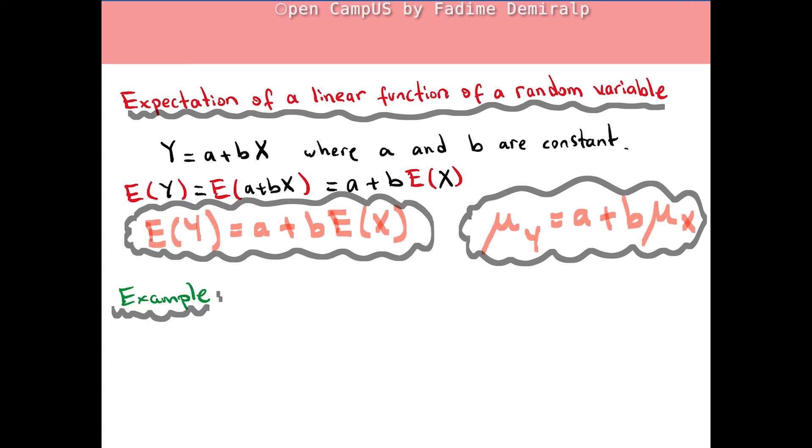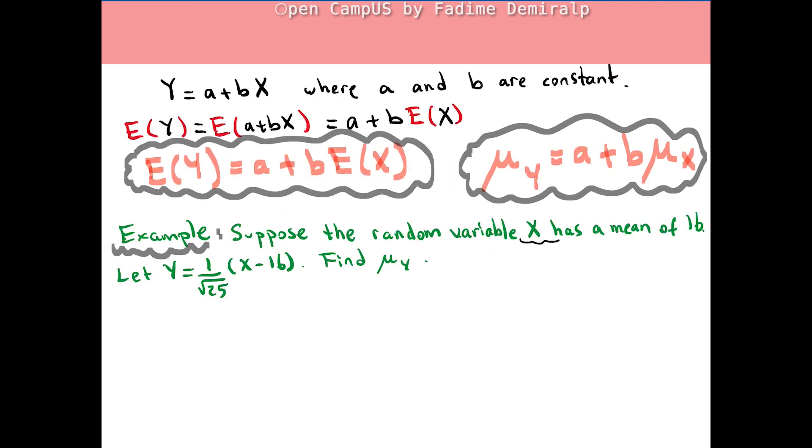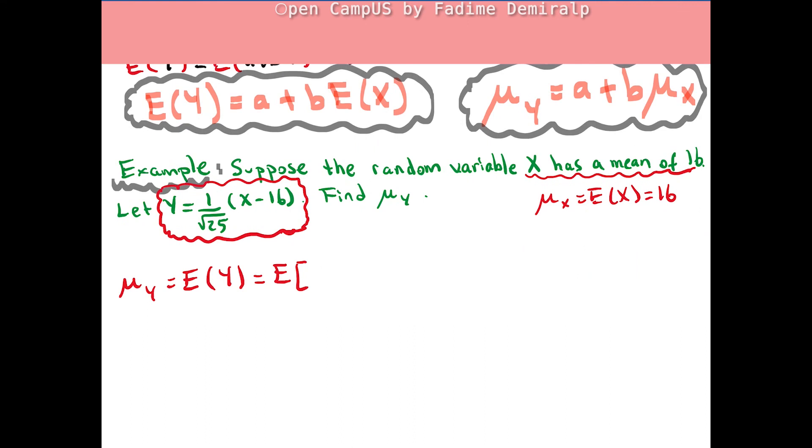Here's a quick example. Suppose that the random variable X has a mean of 16. Let Y be 1 over √25 times (X minus 16). Find the mean of random variable Y. We're given the expected value of X and Y as a function of X. By using the above property we can easily calculate the expected value of Y. Here it is better to use brackets.